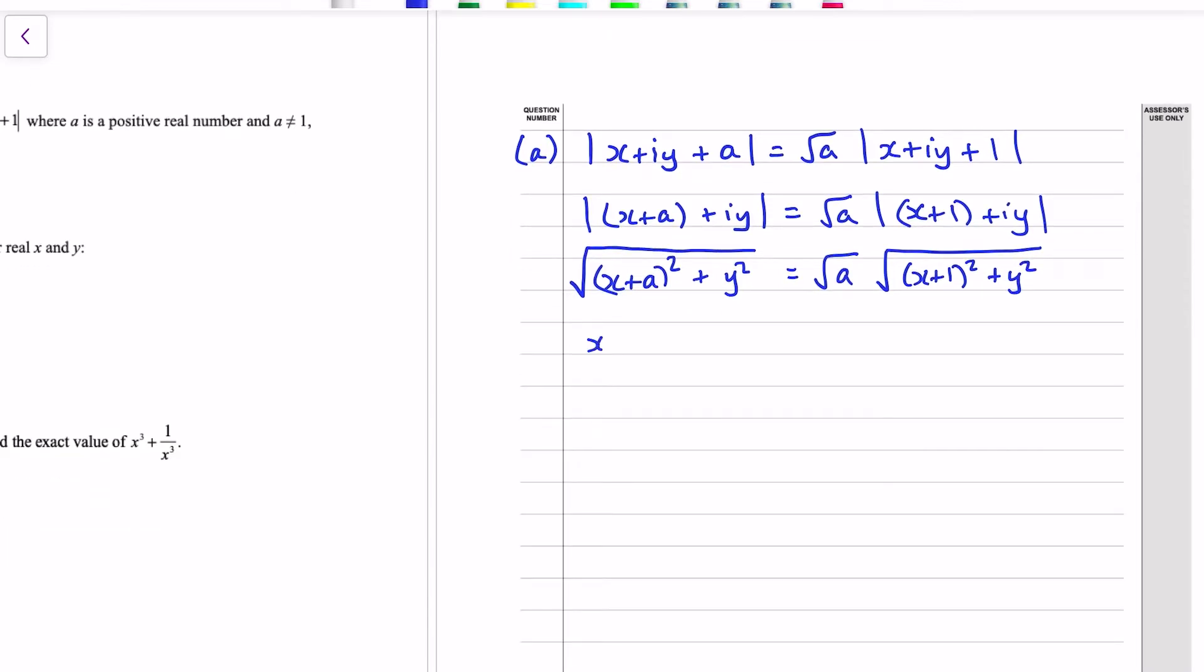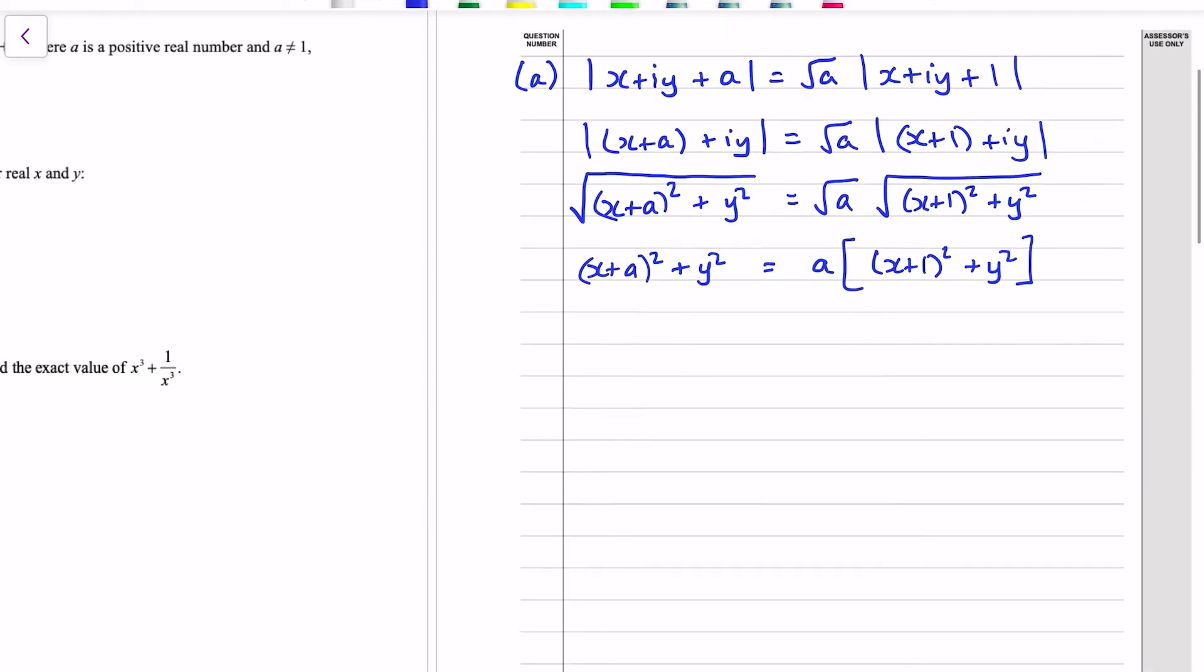The modulus of a complex number is the real part squared plus the imaginary part squared, square rooted. That's just Pythagoras. And we square both sides. Expand out the brackets. Start recognising where we're heading with this. We want the modulus of z, which is going to involve x squared and y squared. And we've got that. This right-hand side has also got an x squared and a y squared.